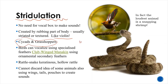In fact, the loudest animal is a snapping shrimp, which uses a technique like that. That also translates to vertebrates, like birds. Some birds can vocalize using specialized feathers, like the club-winged manakin, which uses ornamental secondary feathers to create high-pitched sounds used in mating.